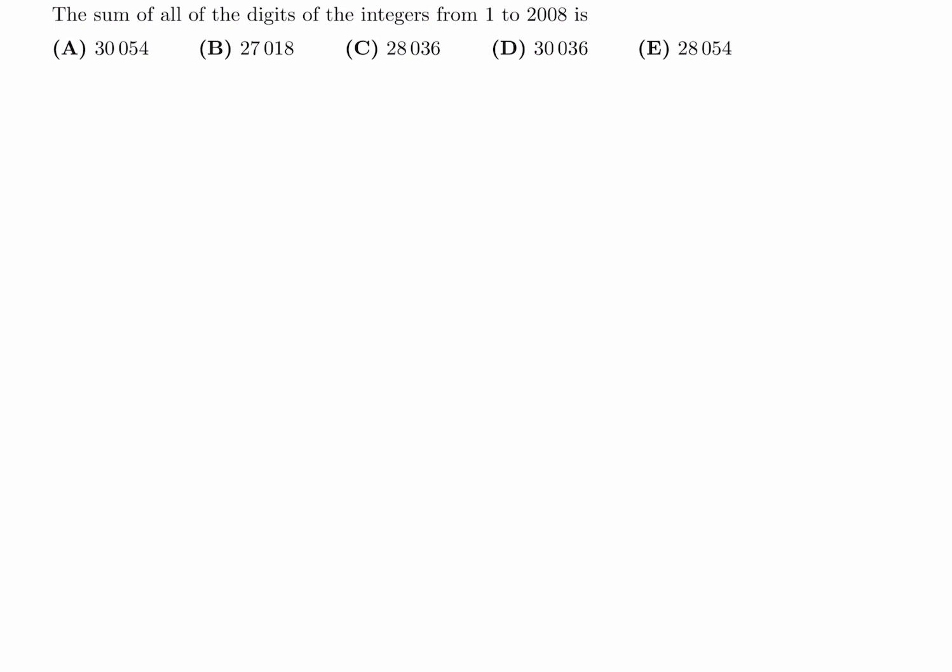So we've got a lot of work to do in this question, but let's take it one step at a time systematically. First, let's just look at 1 to 10. That's going to be 1, 2, 3, all the way up until 9. And if you do that, if you add them up, it's just 9 times 10 divided by 2, which is 45. So that's the first one.